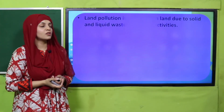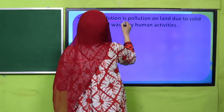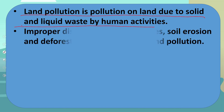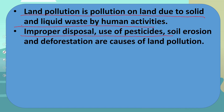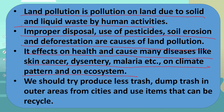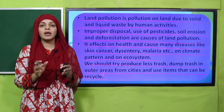Now is the time for wrap-up. The important four points from today's lecture are: land pollution is pollution on land due to solid and liquid waste from human activities; improper disposal, use of pesticides, soil erosion, and deforestation are causes of land pollution; it affects health and causes diseases like skin cancer, dysentery, and malaria; and it affects climate patterns and ecosystems. We should try to produce less trash, dump trash in outer areas away from cities, and use items that can be recycled.